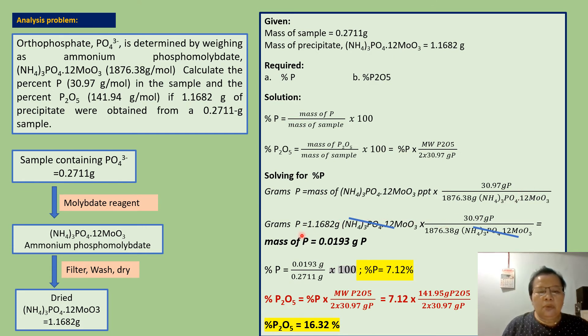Grams phosphorus equals 1.1682 grams of ammonium phosphomolybdate precipitate times 30.97 grams phosphorus divided by the molar mass of ammonium phosphomolybdate which is 1,876.38 grams. Grams ammonium phosphomolybdate cancel. The mass of phosphorus is 0.0193 grams.